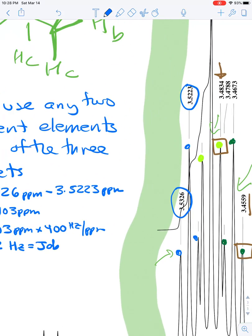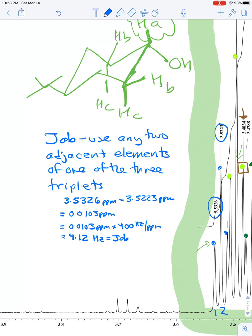So again, you subtract the two numbers, that's the part per million value, and then you multiply that by 400 hertz per part per million, and that gives you a value of 4.12 hertz for JAB. And again, that's within the normal range.